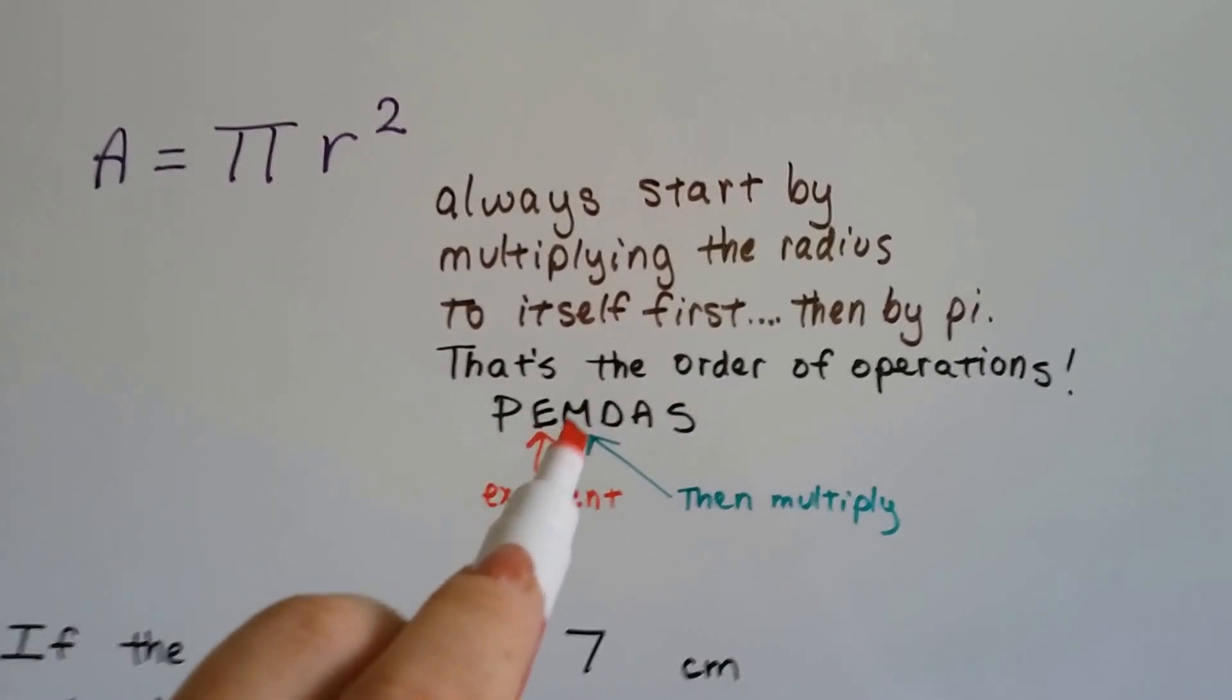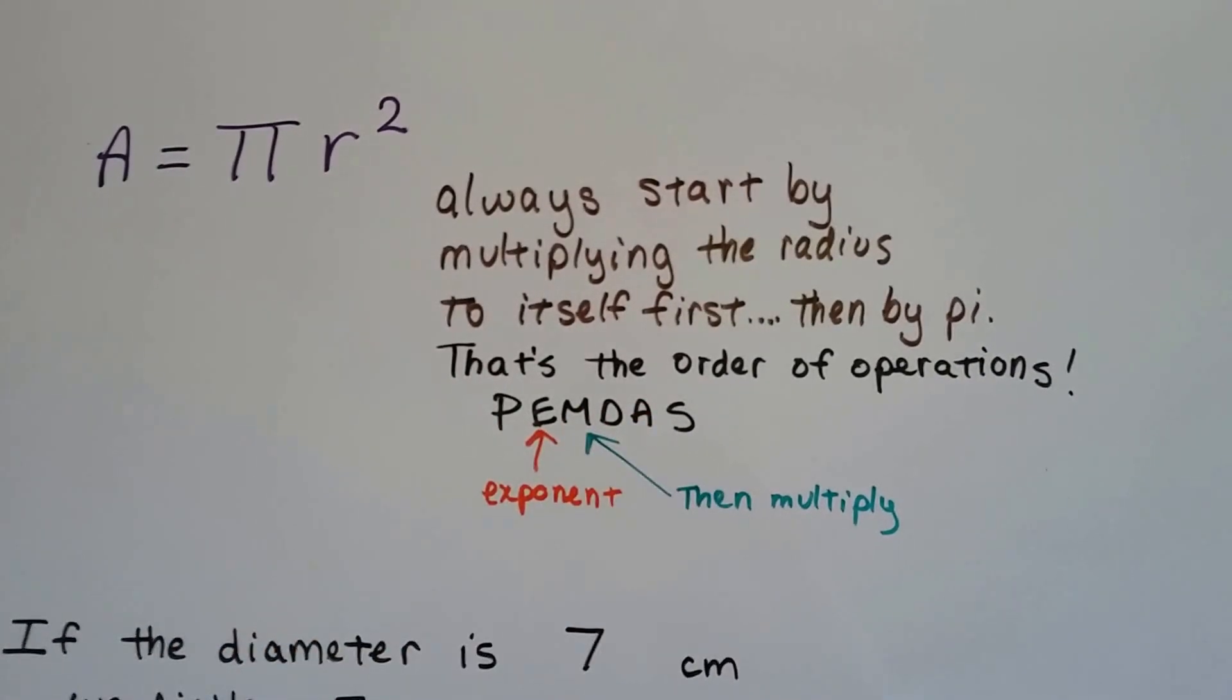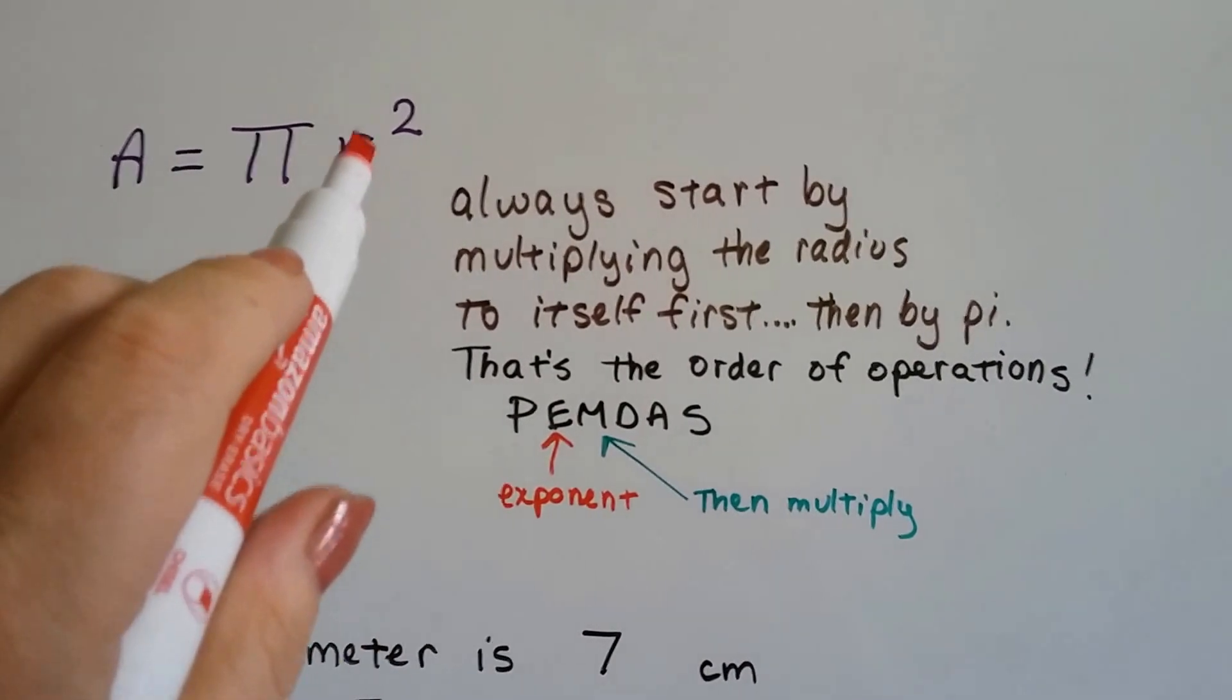See? Parentheses, exponents, multiply, divide, add, subtract. So we have to do the exponent first, radius times radius.